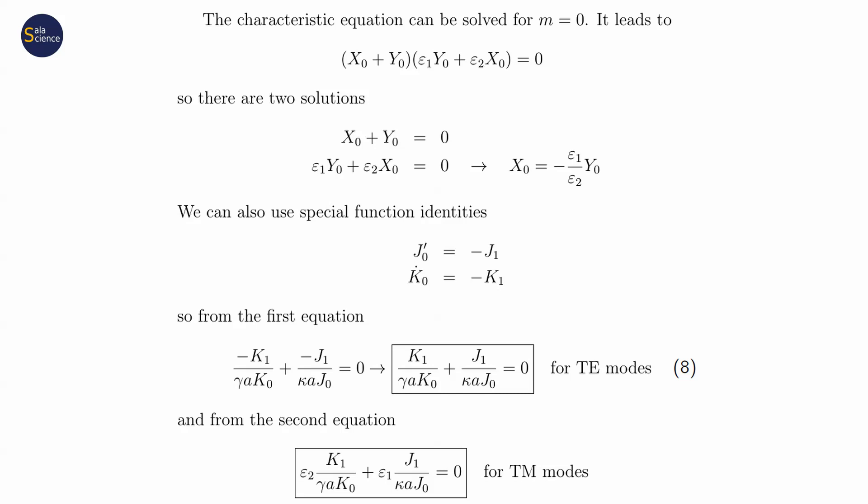By using some special function identities, we can get rid of derivatives of special functions. Instead of derivative of J0, we can write minus J1. Instead of derivative of K0, we can write minus K1. We end up with much easier equations.